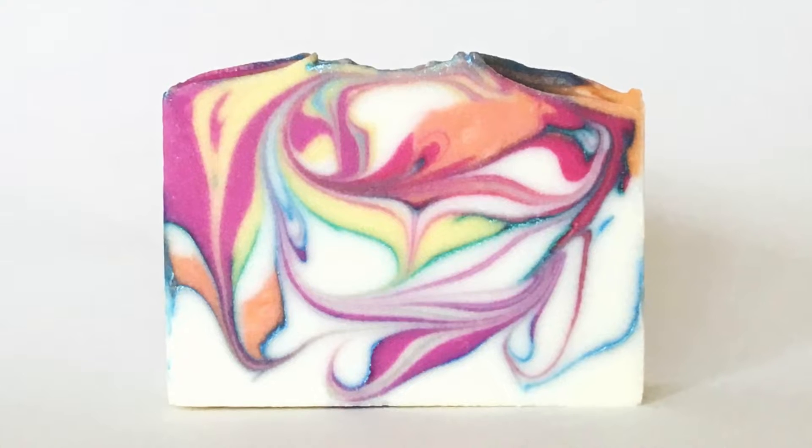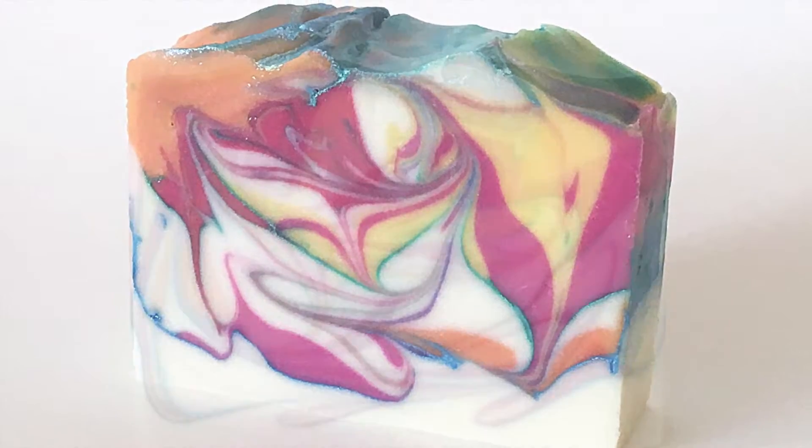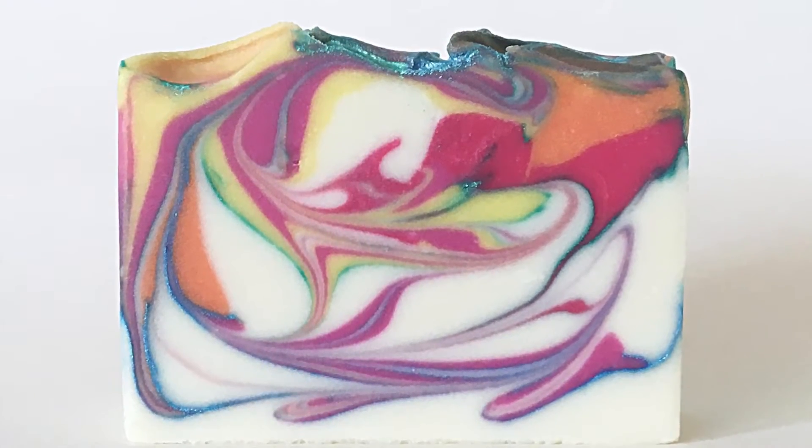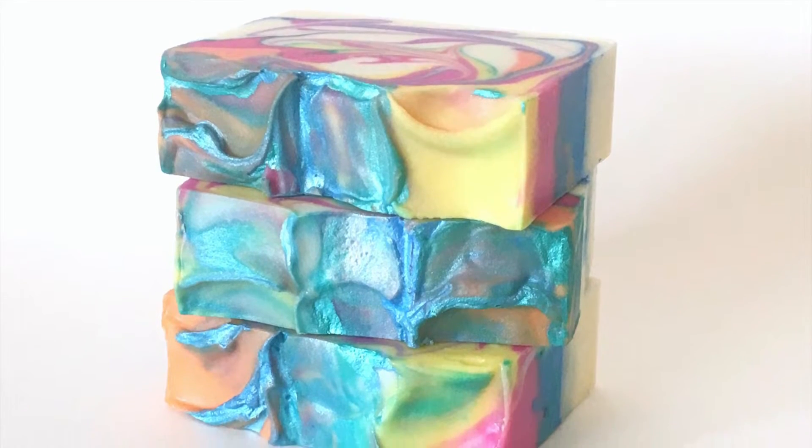And here's the cut soap. I really like how the mica in oil outlines the colored soap. The interference mica gives it a nice shimmer.